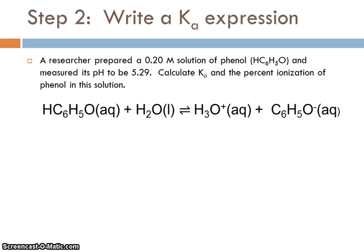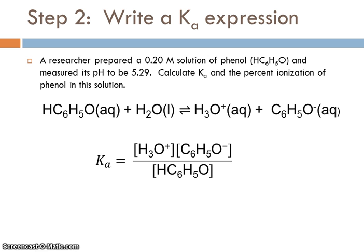Okay, our next step is to write a Ka expression, now that we've got the balanced equation. At this point, you should be very comfortable writing equilibrium constants. So, all the Ka expressions take the same essential form. The hydronium ion and the conjugate base are in the numerator, and the original undissociated acid is in the denominator. They all take the same general form, whether you know the formula of the acid or not.